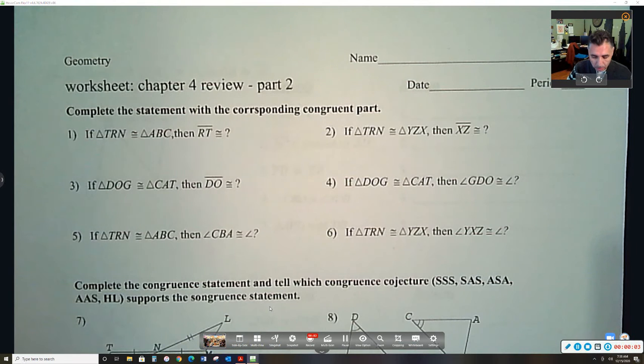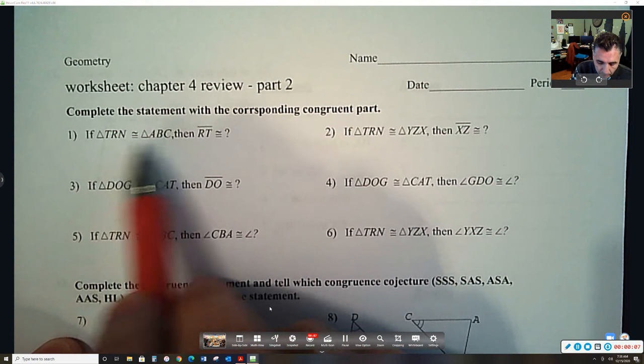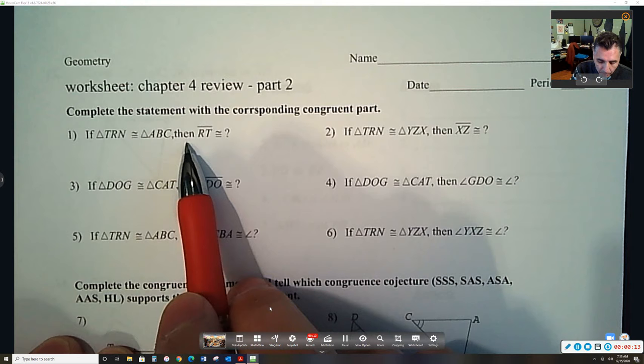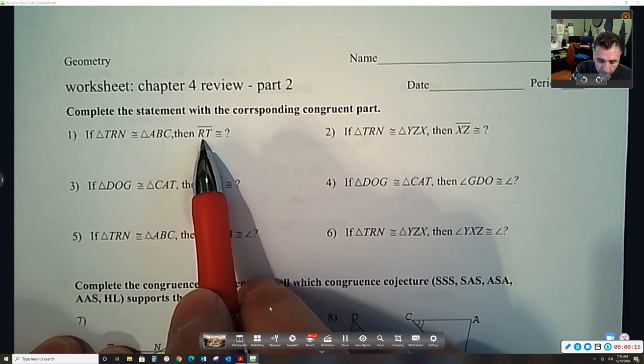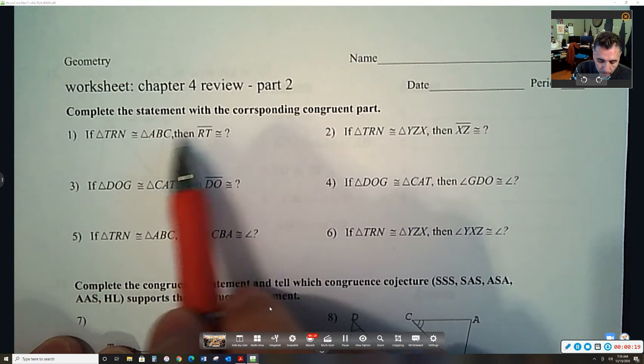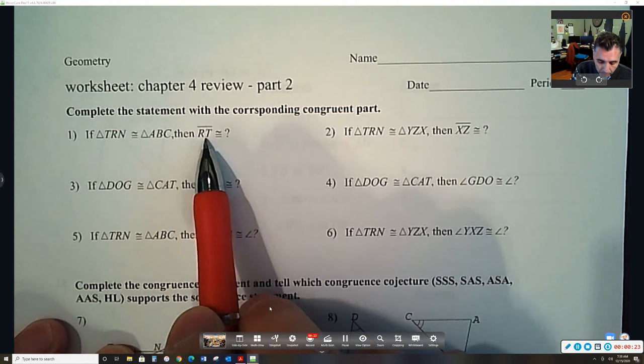Hi everybody, I'm going to go over this real quick with you guys. So here we have this congruent statement. Triangle TRN is congruent to triangle ABC. And then we want to know side RT from this triangle is congruent to which side on this triangle. And it's super easy to figure out. All you have to do is follow the order in which the letters are picked out.